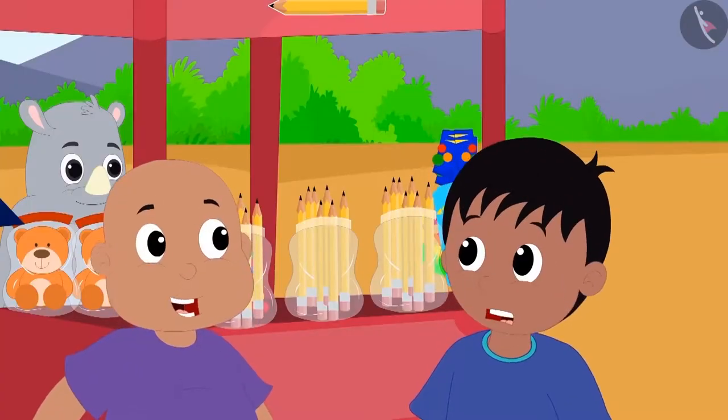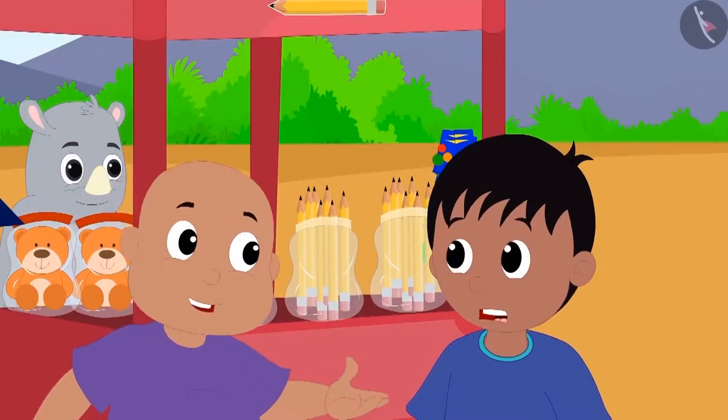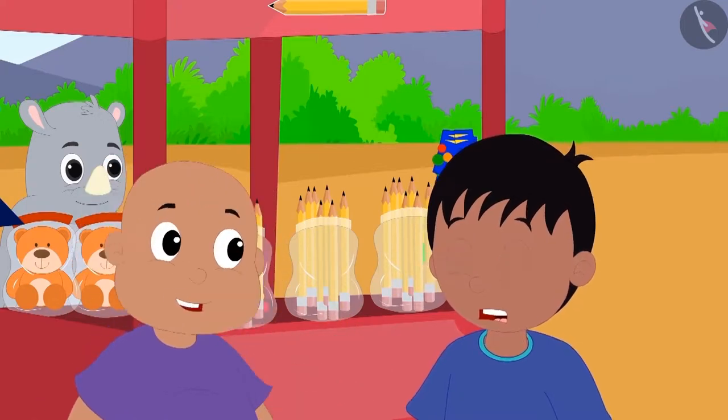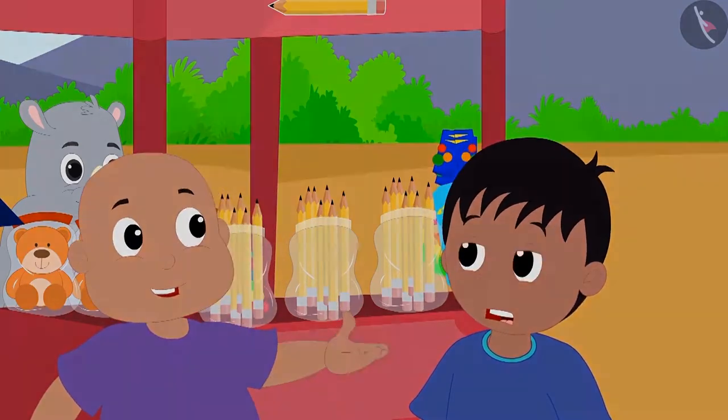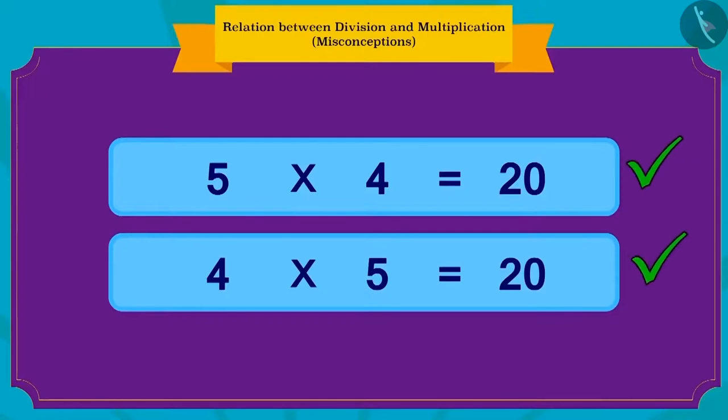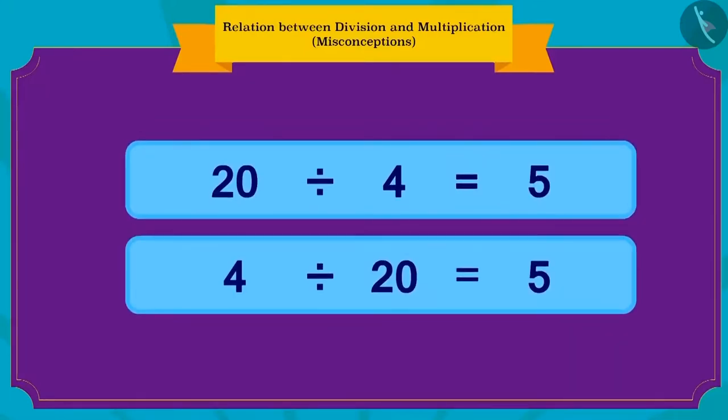Bablu laughed and explained to Raju that even though division and multiplication have a relationship, the way we do for multiplication, we cannot write division sums by changing places of numbers.